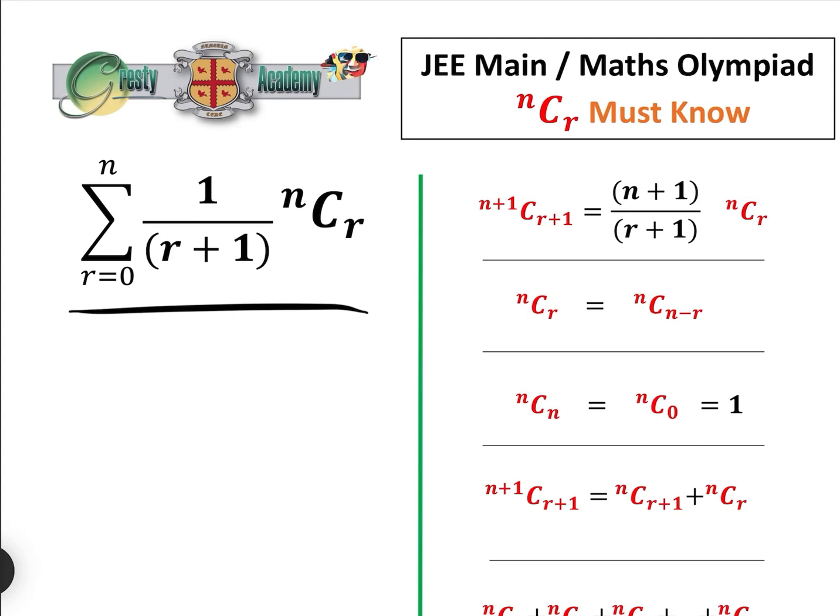And to solve them, you need to know all of these formulae that I've written on the right. So first of all, we have n plus 1 choose r plus 1 equals n plus 1 over r plus 1 times nCr.